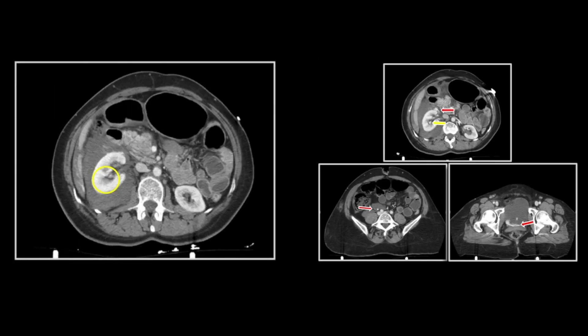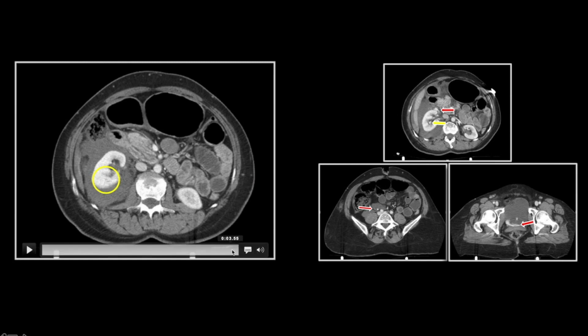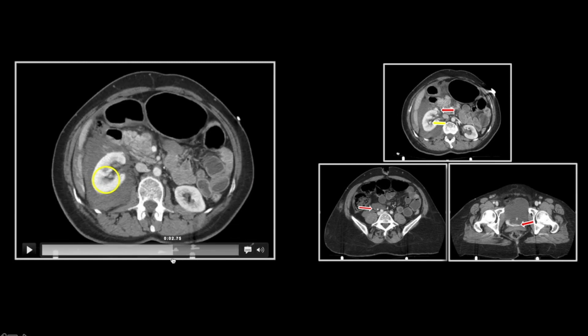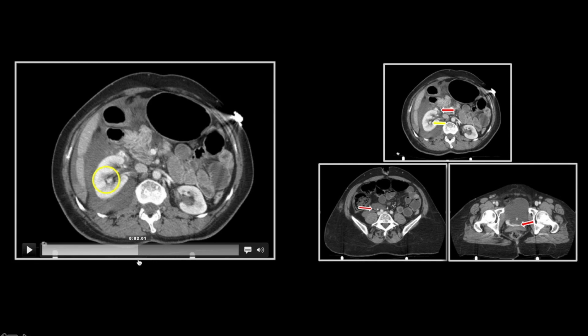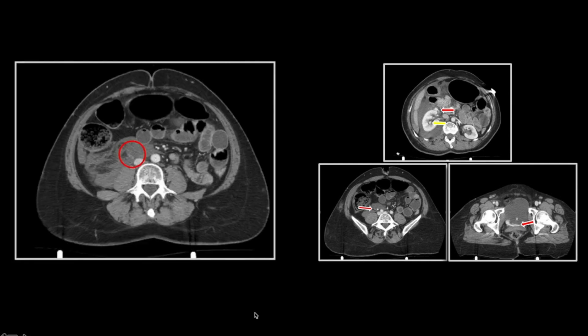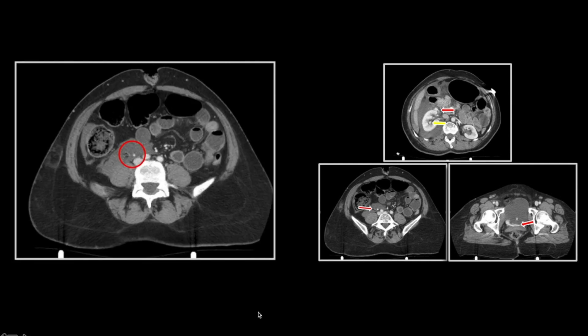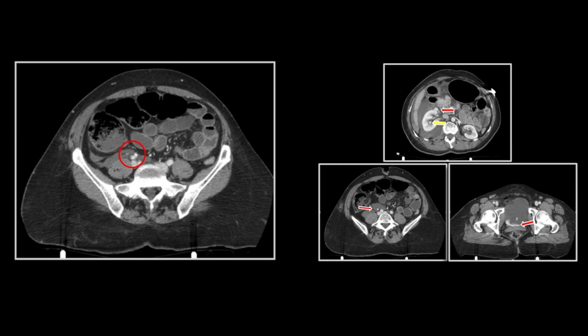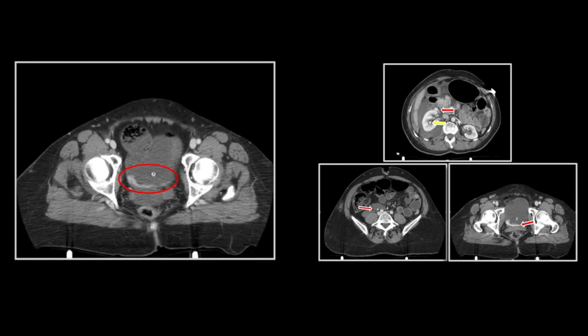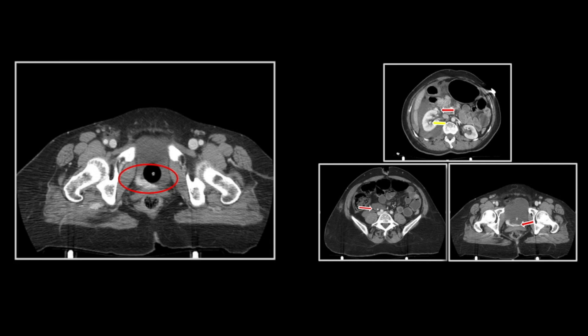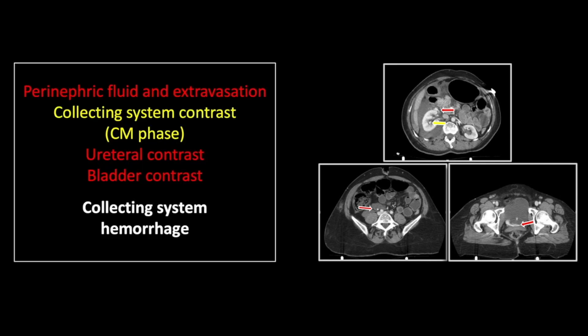Here on the CINI, you can appreciate again that hyperdense contrast within the collecting system of the right kidney, in a kidney that is in the corticomedullary enhancement phase. Here we see the right ureteral and bladder contrast. This was angiographically confirmed — an arterial hemorrhage related to a renal laceration with hemorrhage directly into the right renal collecting system.